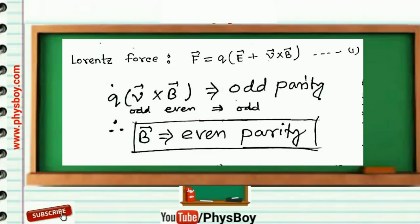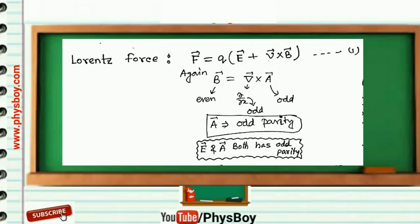Again, B⃗ can be written as curl of A⃗. And we just saw that B⃗ is even, and the del operator is odd under parity transformation.